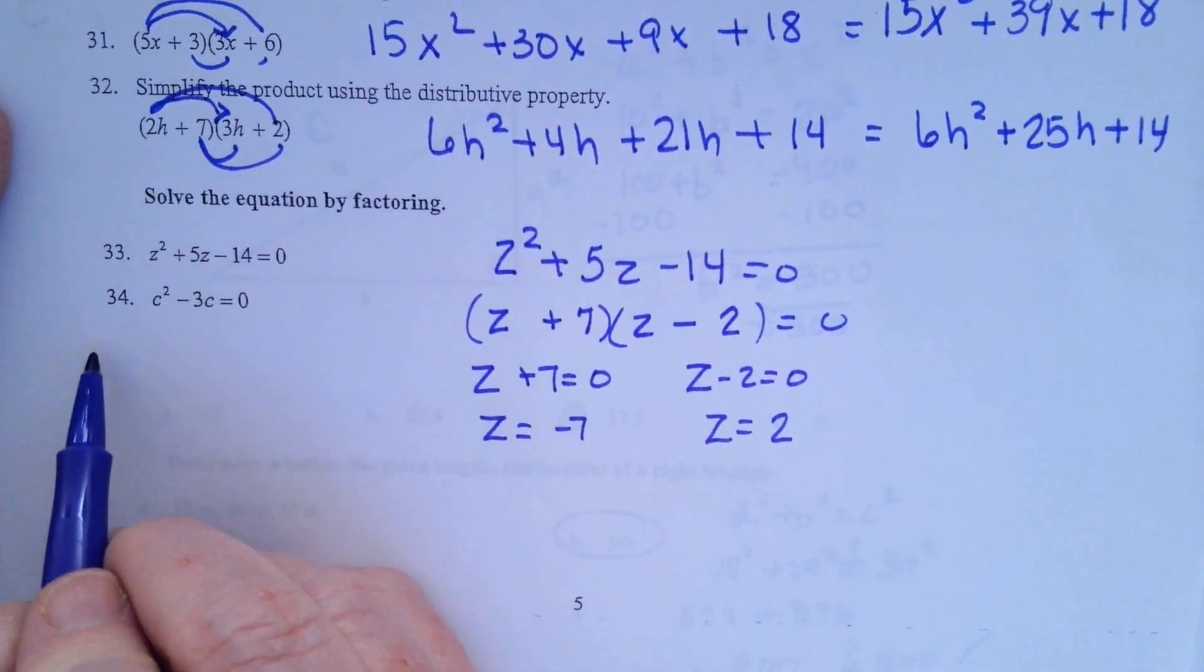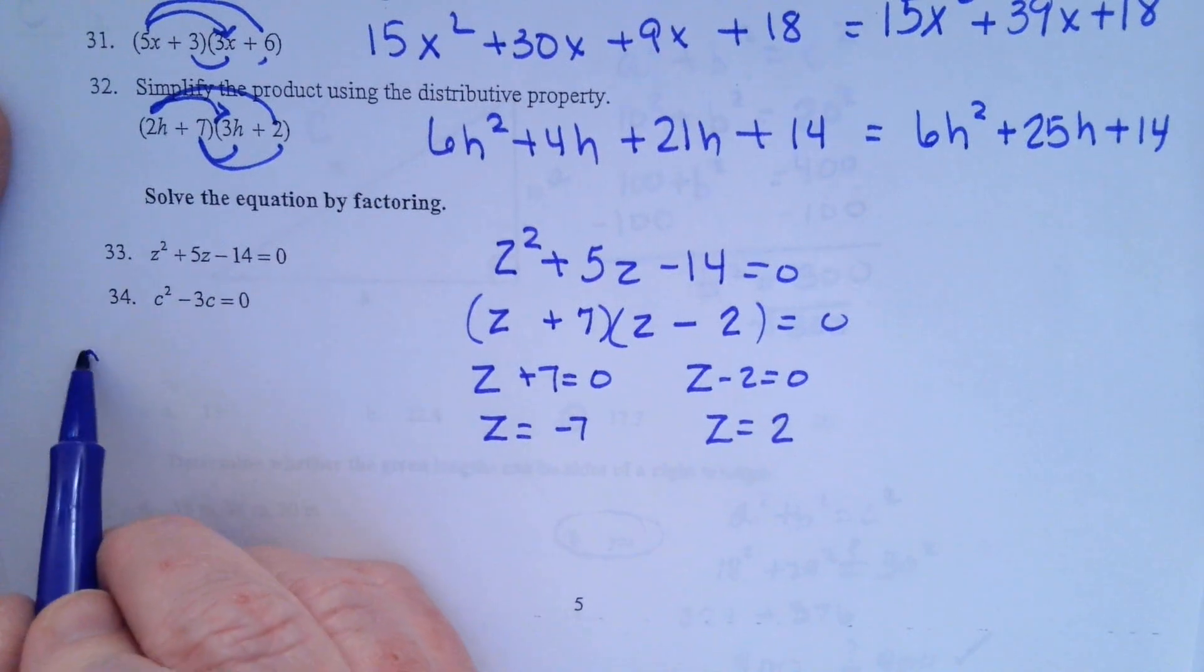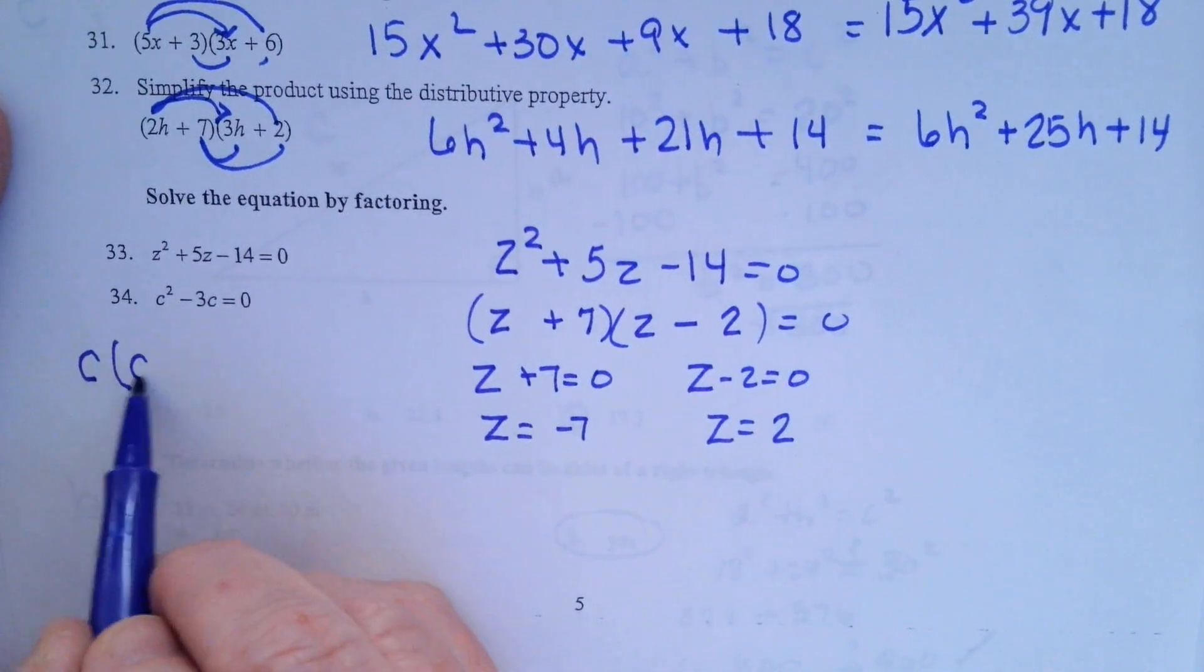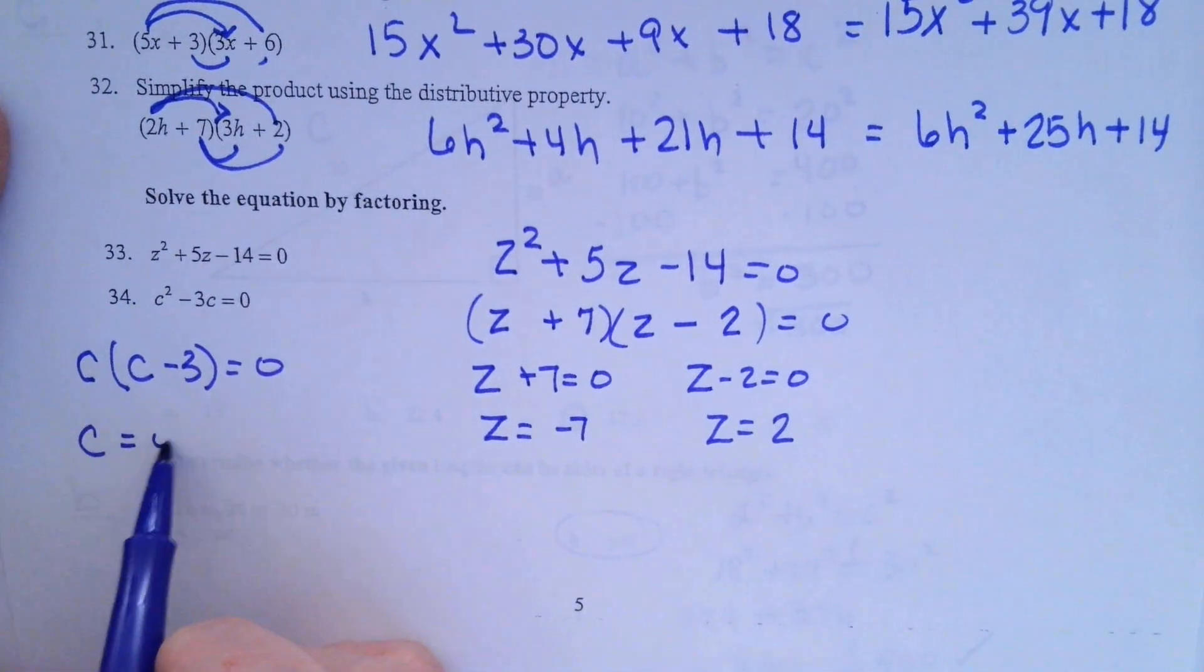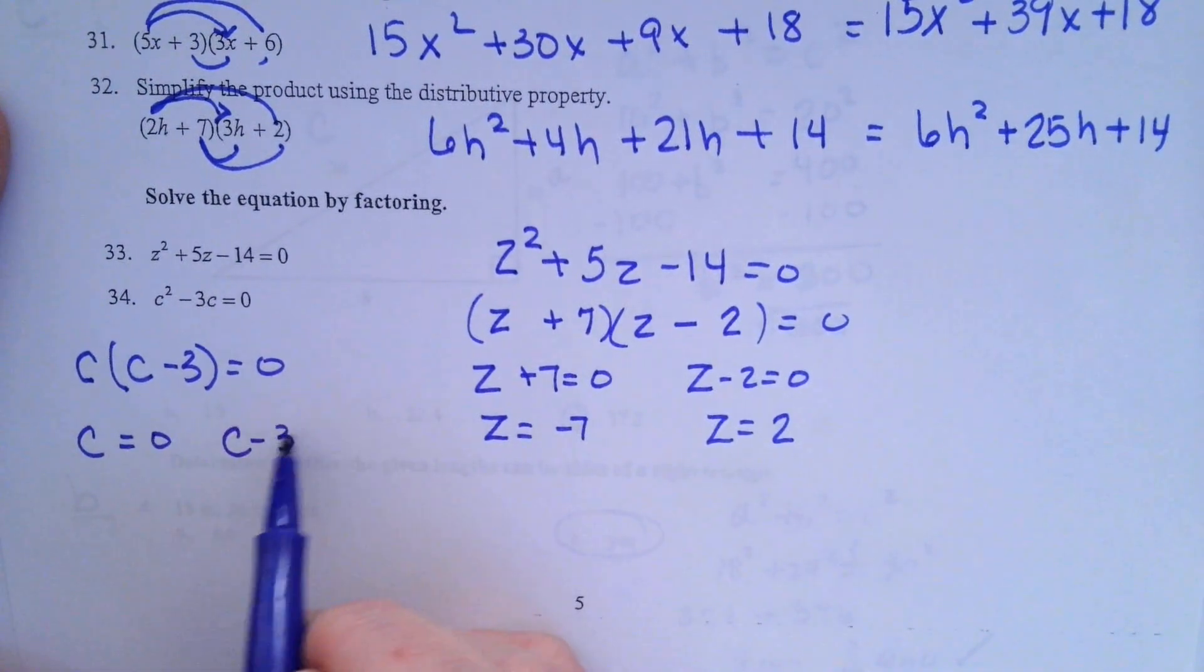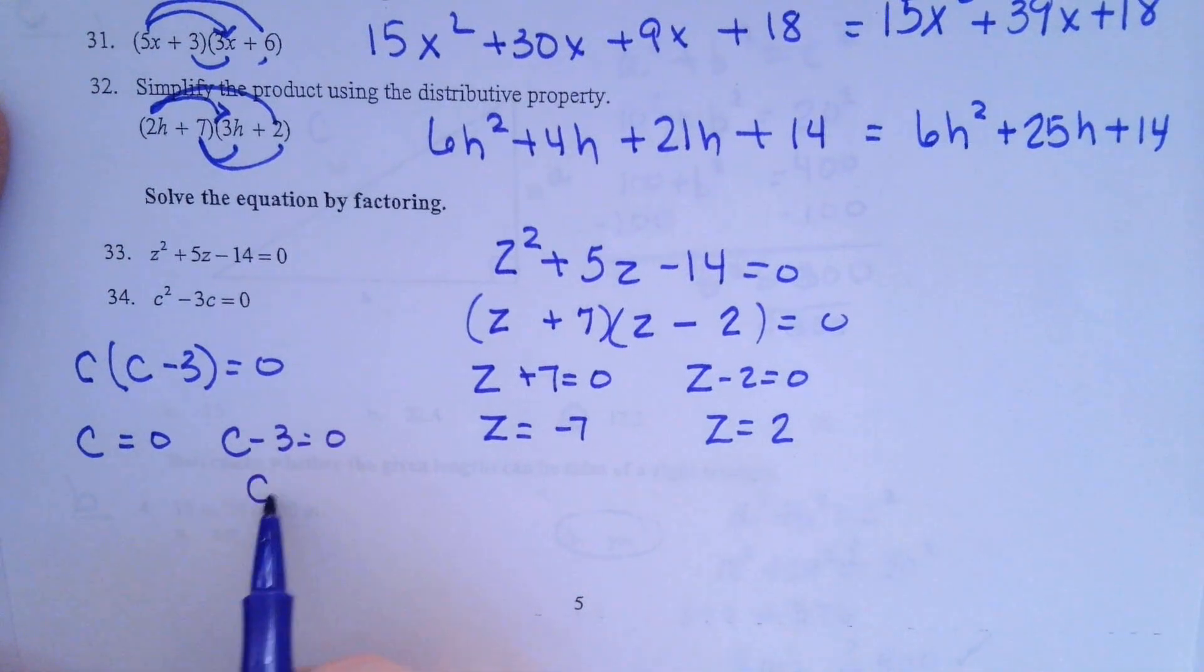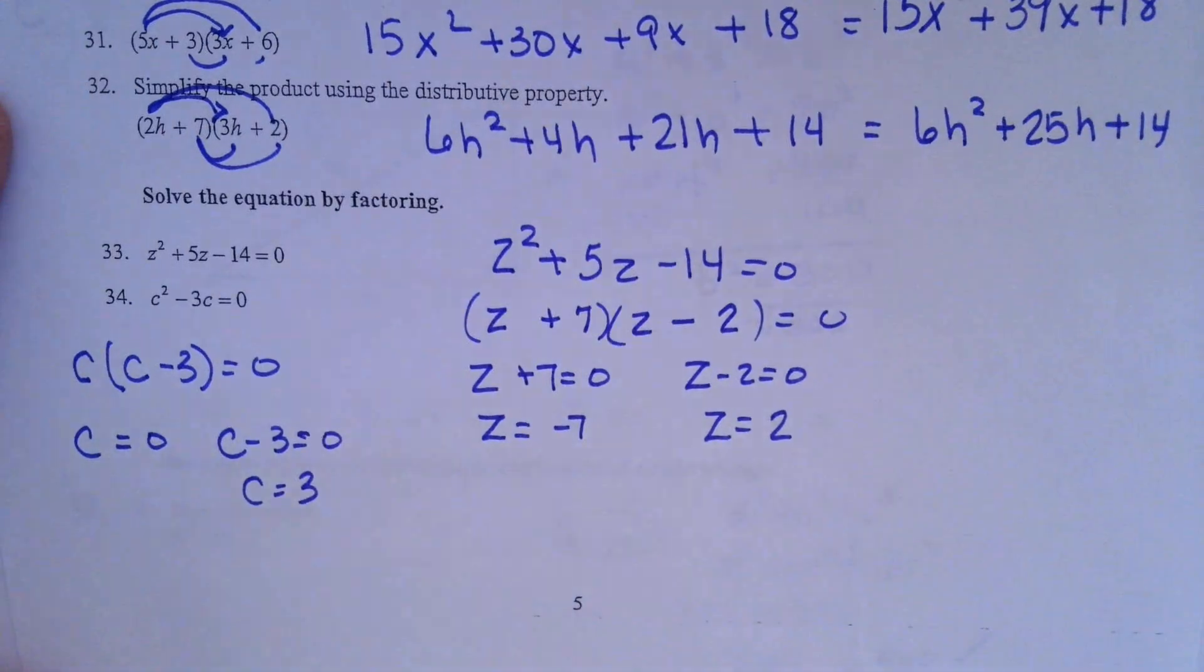34, we're going to factor that one. They have a common term, is c. So it's c times c minus 3 equals 0. You have two options here. c could equal 0, or c minus 3 could equal 0. In that case, c would equal 3. And that concludes our study guide.